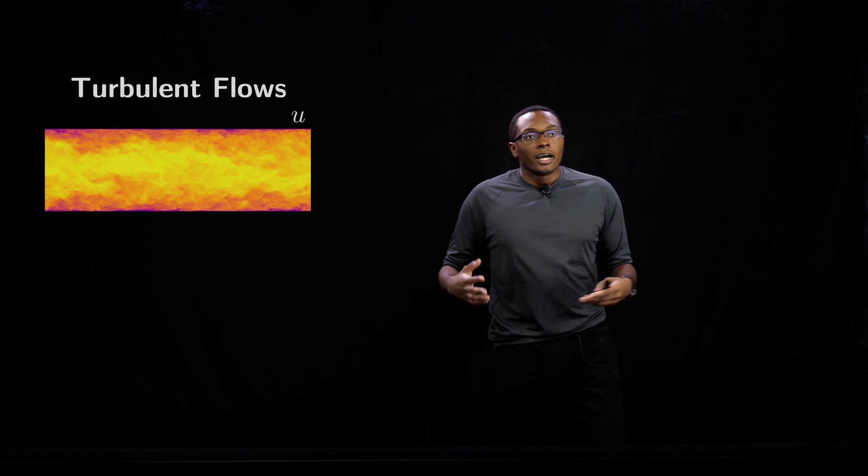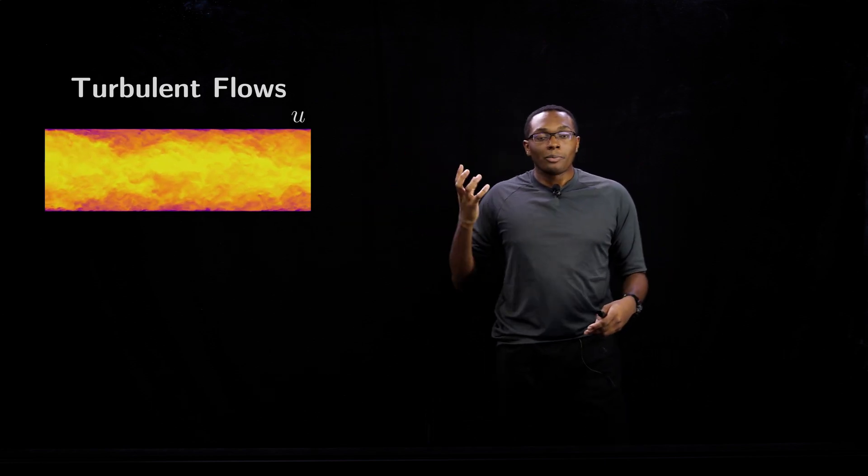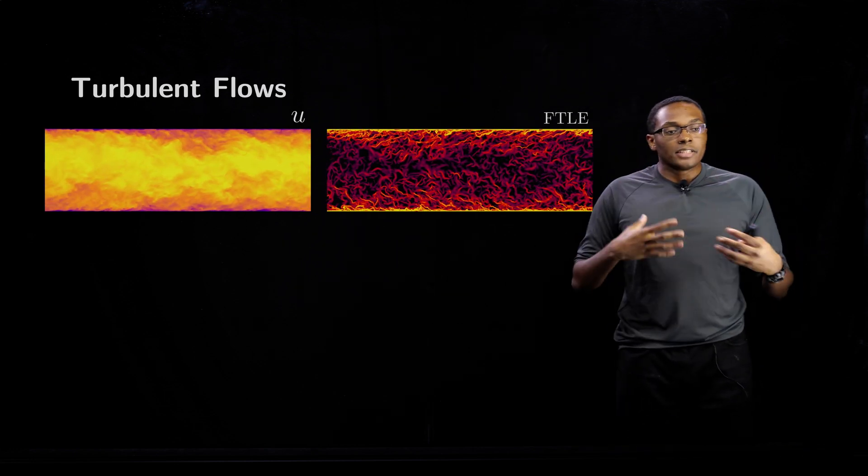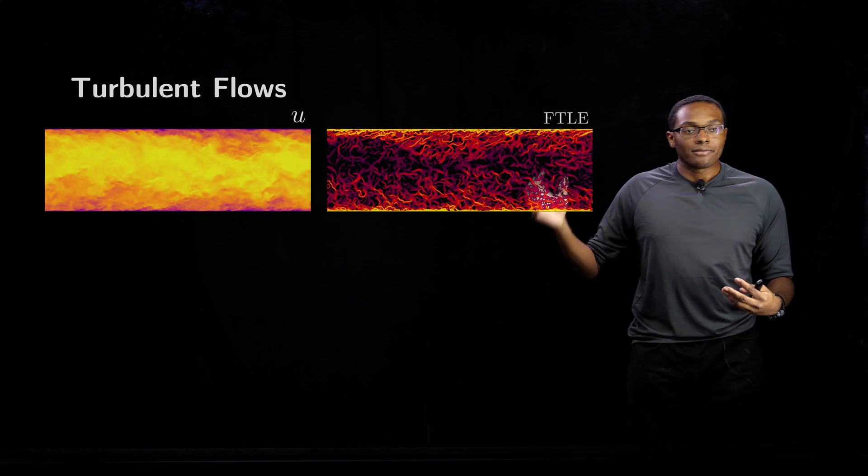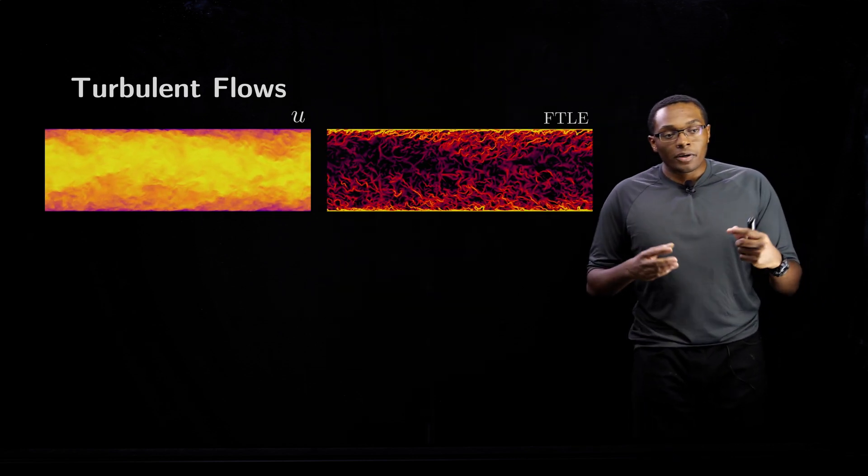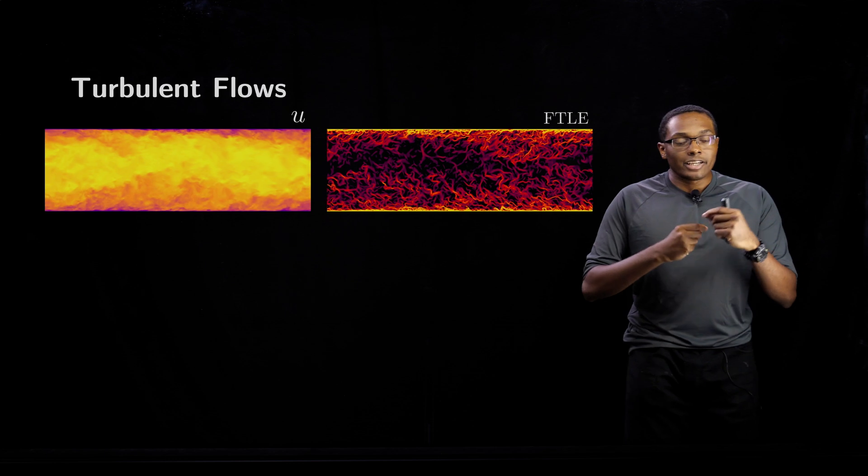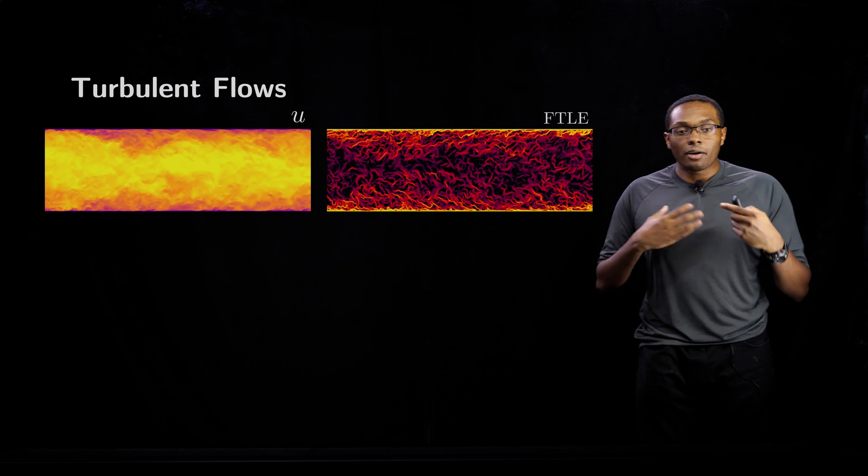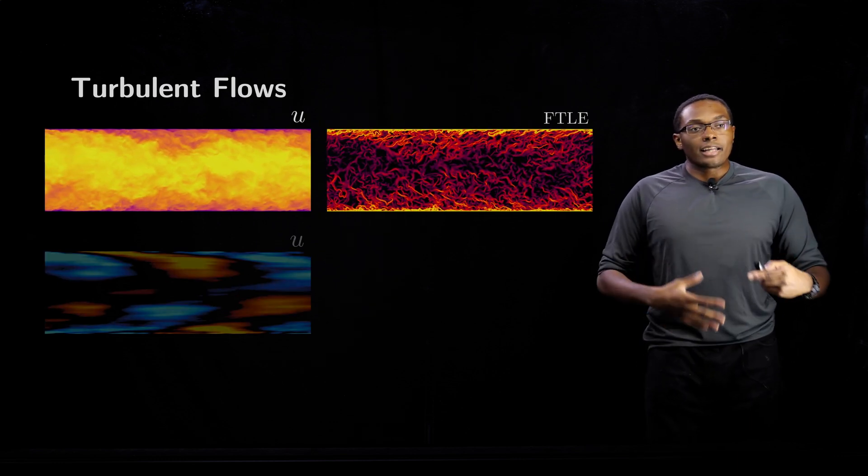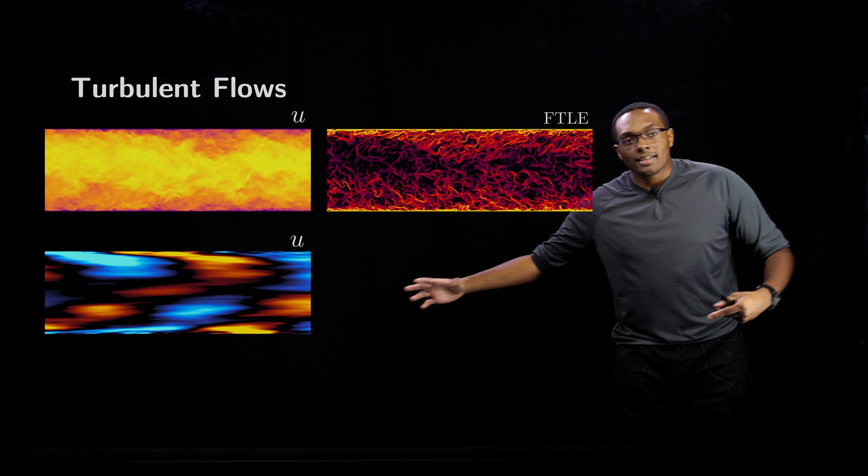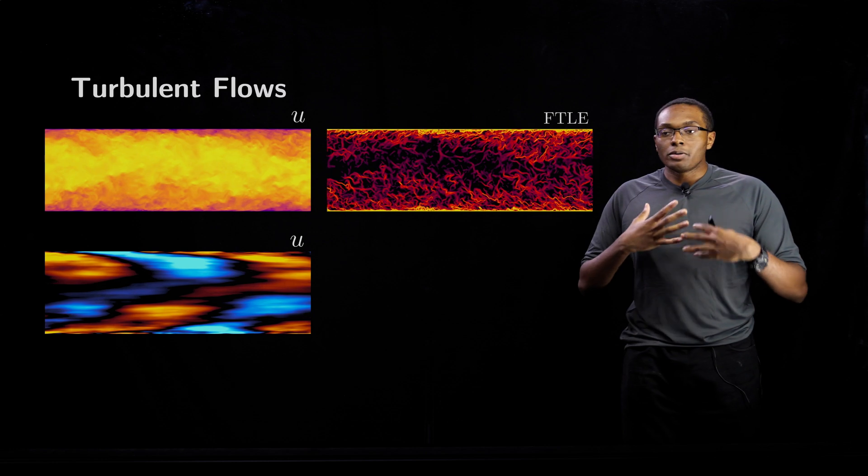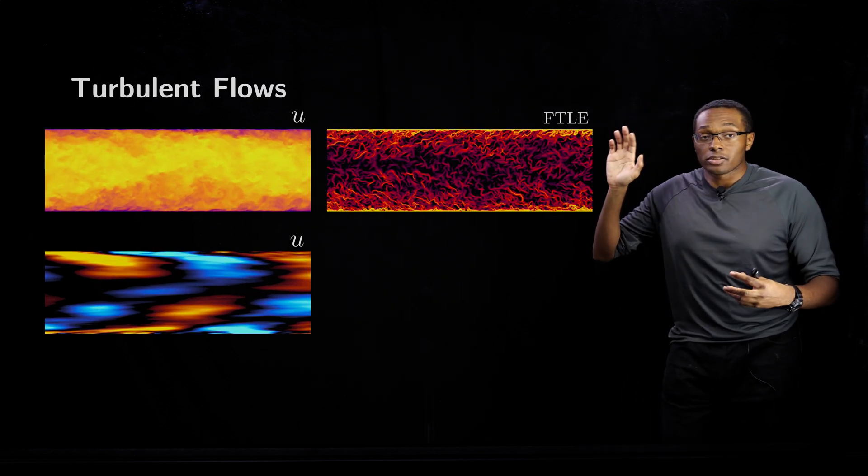We also looked at flow across a turbulent channel. This is turbulent channel flow with the streamwise velocity, and this is the forward FTLE structures of the full flow field. Notice how there's a number of intricate small scale features. One of the ideas behind turbulent flows and how they are driven is based on these larger scale structures that exist. The idea is that these large scale motions drive these smaller scale features in the flow.